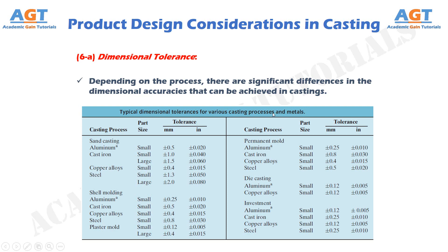For example, when casting using cast iron as the material, for small parts a tolerance of plus or minus 1 mm, or plus or minus 0.040 inches, is to be provided on all sides. For large parts of the same material, a tolerance of plus or minus 1.5 mm, or plus or minus 0.060 inches, is to be provided on all sides. Similarly, for other metals, we can find typical dimensional tolerances for various casting processes from this table.